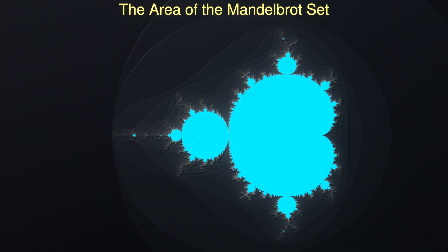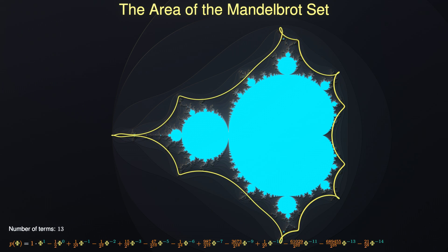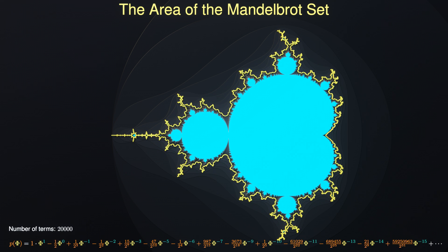We've seen in the last video how a simple circle is projected onto the boundary of the Mandelbrot set. The more terms we consider in the mapping polynomial, the closer we get to the boundary of the Mandelbrot set.